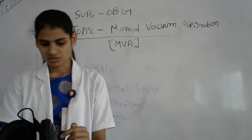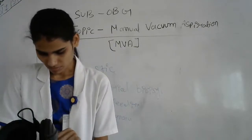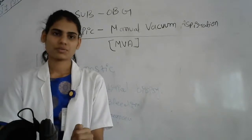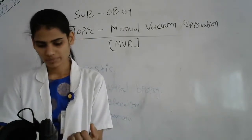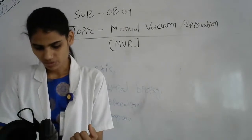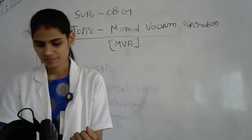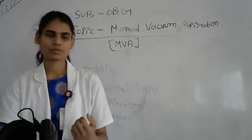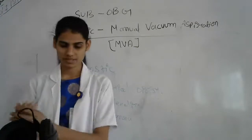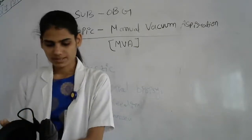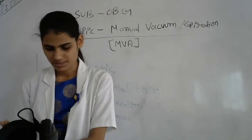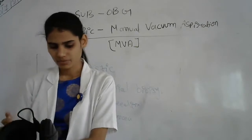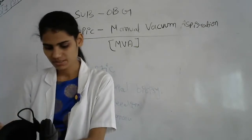Now the contraindications — the conditions in which we cannot provide the vacuum aspiration procedure. First is termination of pregnancy greater than 12 weeks under general anesthesia, because bony tissue and other body tissue is found which is difficult to evacuate. If the woman is having medical termination of pregnancy less than 12 weeks under general anesthesia, this procedure should be avoided.